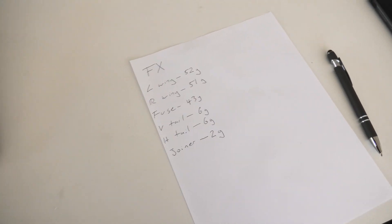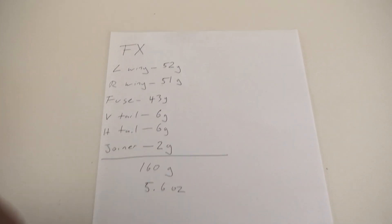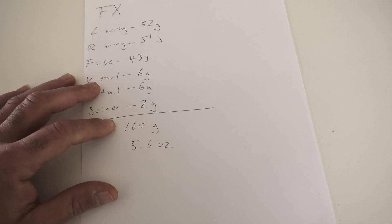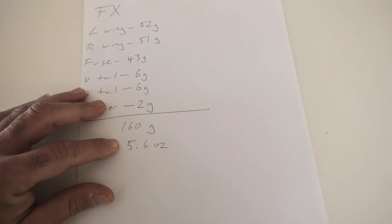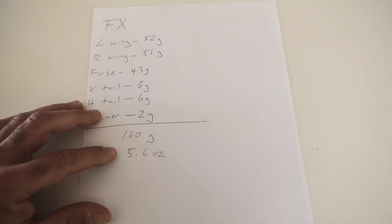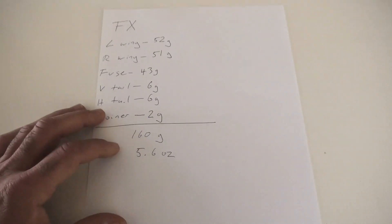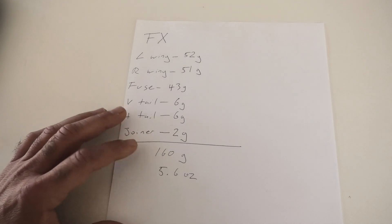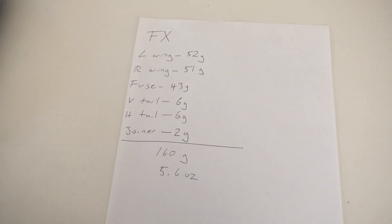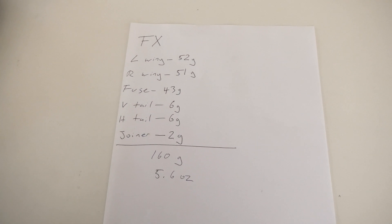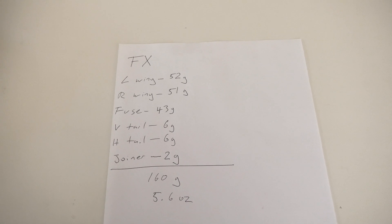Not that I have the most accurate scale in the world, but it'll give us a good ballpark. So we'll add these guys up. We have a total of the components at 160 grams or 5.6 ounces. So I think these are pretty competitive weights. And I think this is a standard layup. I don't think it's a super light layup and it's definitely not a windy or strong layup.